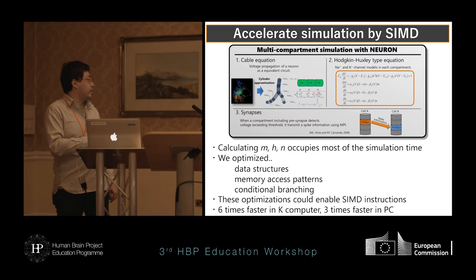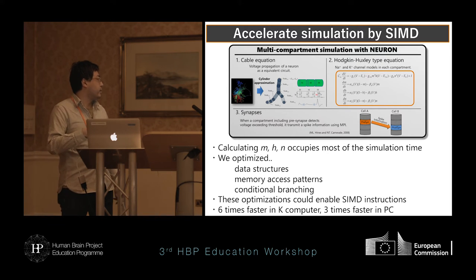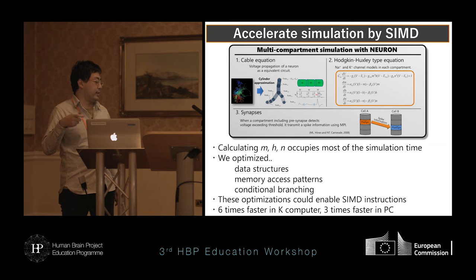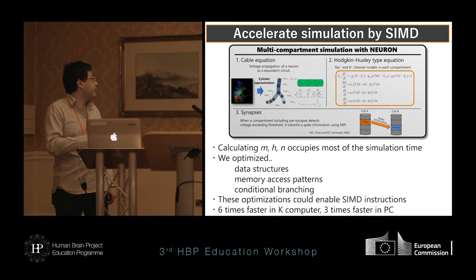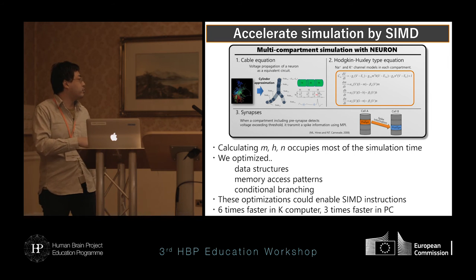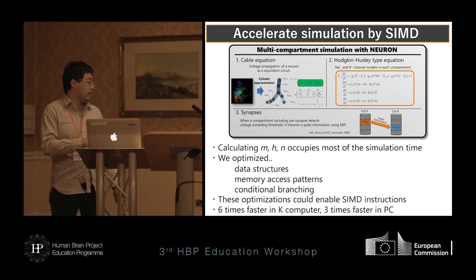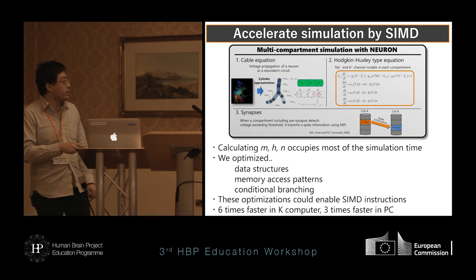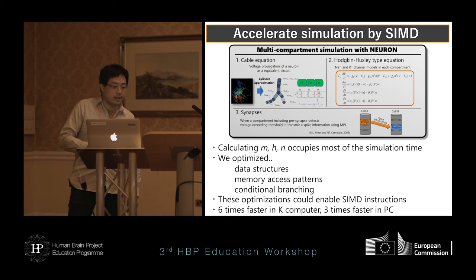We optimized these areas to increase performance, by changing the data layout of parameters and enabling better cache efficiency, and changing groupings to reduce conditional branching. Finally, we enabled the SIMD instructions of K-computer, and we obtained a six-times speedup on K-computer. Our optimization is also effective on Intel's processor — it is three-times faster than the usual NEURON. Thank you so much.